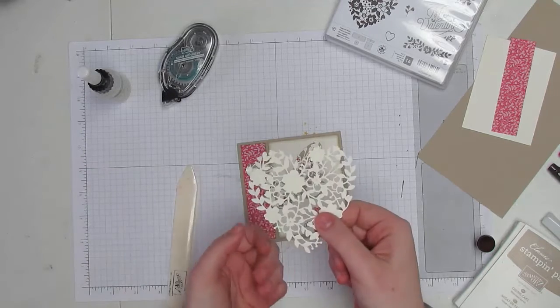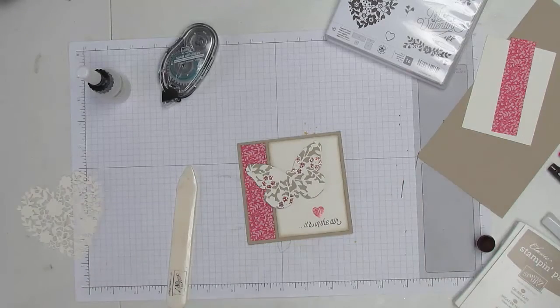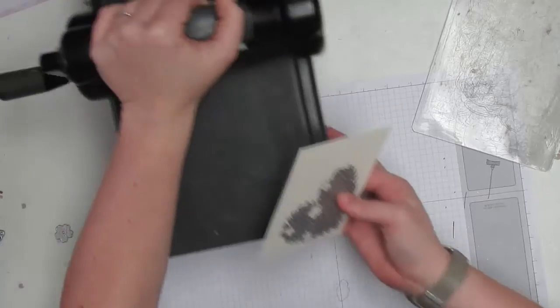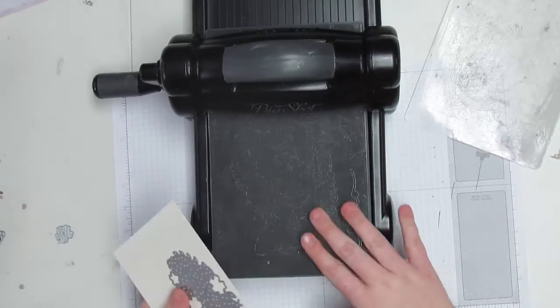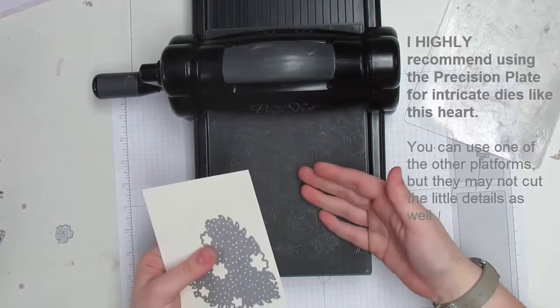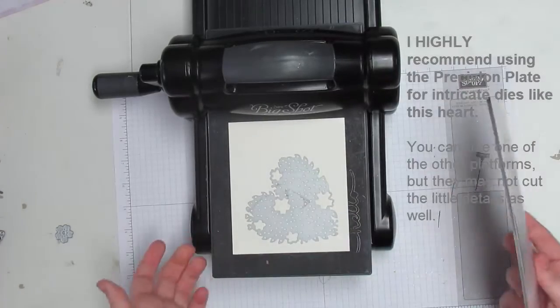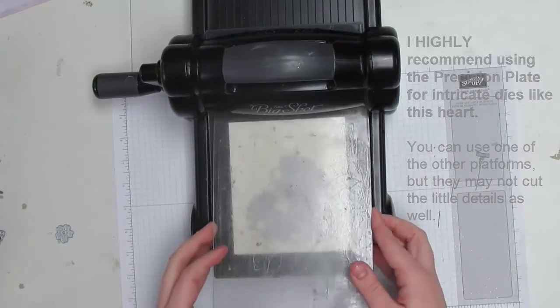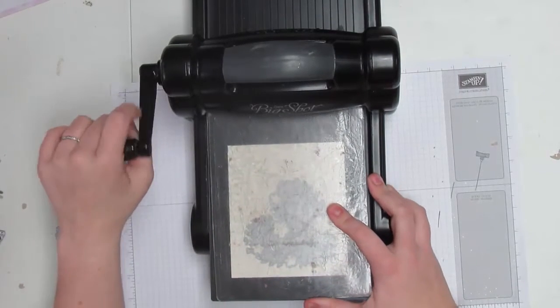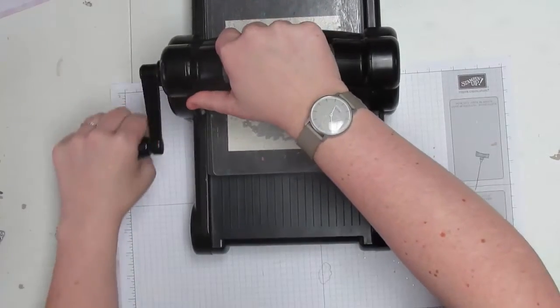So first I will show you how I die cut out this and the easy way to get it out of the die. You're going to start by using the Bloomin' Heart Thinlet and cutting it out of Very Vanilla cardstock. Now I'm cutting it out using my Big Shot with the precision plate on the magnetic platform. The precision plate, being a flat piece of metal, does a lot better at getting everything fully cut. Even with this, I still run it forward and back once or twice.